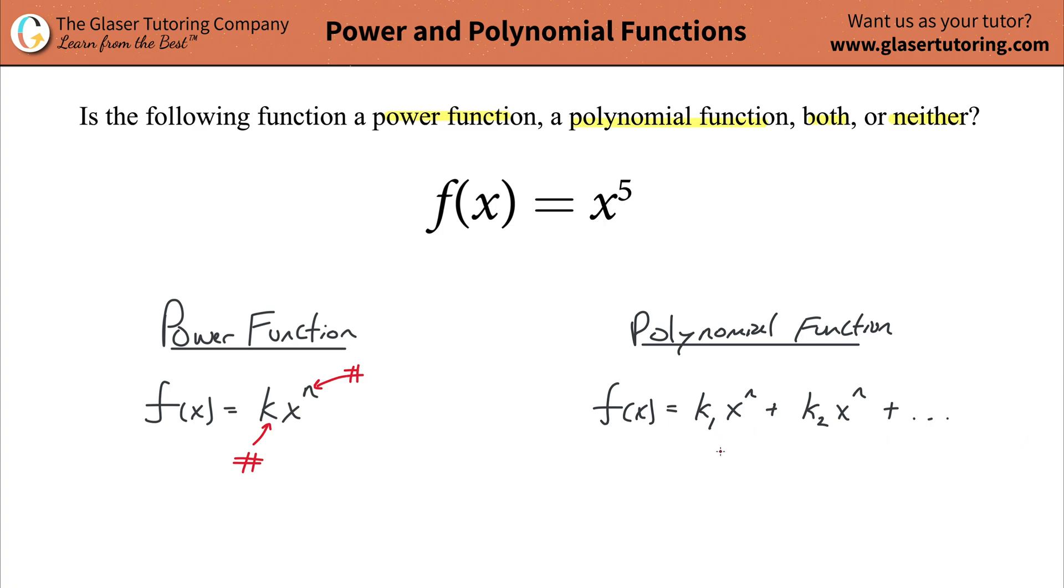two, three, four, etc., but what you have to have is a constant multiplied by a variable raised to some number or some other constant. If you notice, they're very similar—the power function and the polynomial function. It's just that the power function has